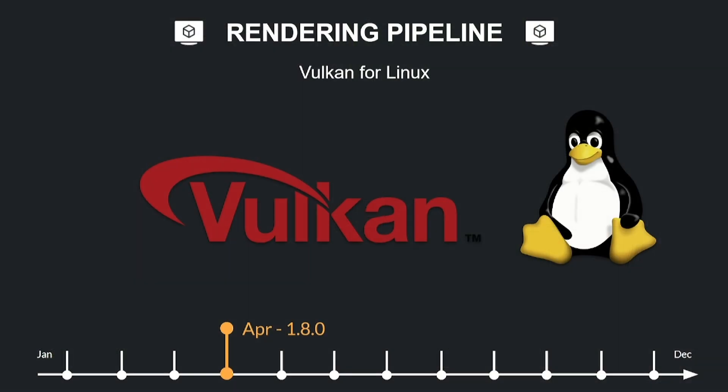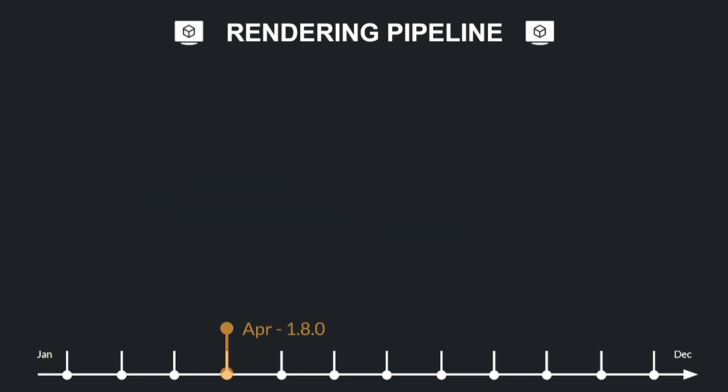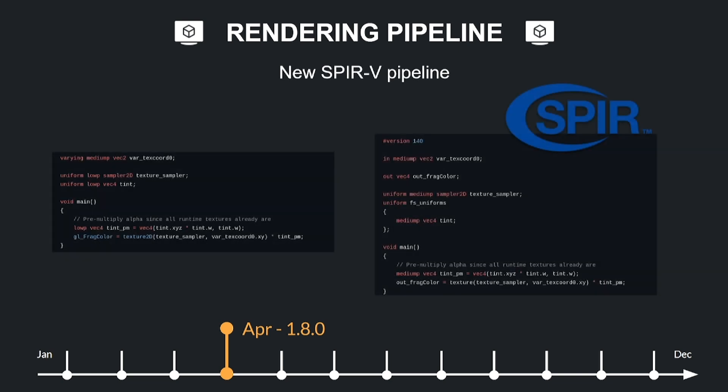In April, the Vulkan backend was finally enabled for the Linux platform. It came along with many other small improvements and fixes, such as a possibility to disable vSync in Vulkan. The shader support in Default received a major update. Default processes engine shaders using a pipeline approach and currently supports two configurations: the new pipeline and the legacy pipeline.